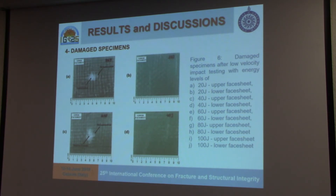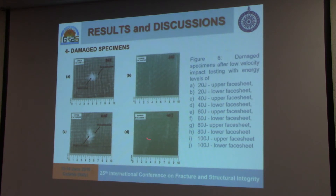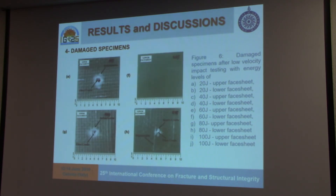These are photographs of the real specimens showing delamination and indentation. For 20 joules, we only observed indentation and delamination on the upper face sheet — there was no damage on the lower face sheet. The same was true for 40 joules: no damage on the lower face sheet, but delamination on the top and a matrix crack at the center of the specimen.